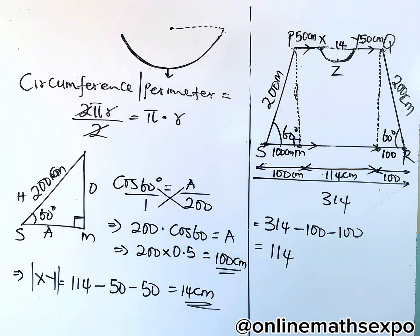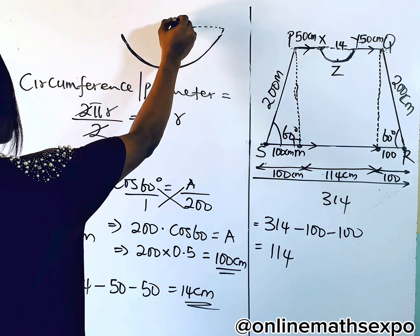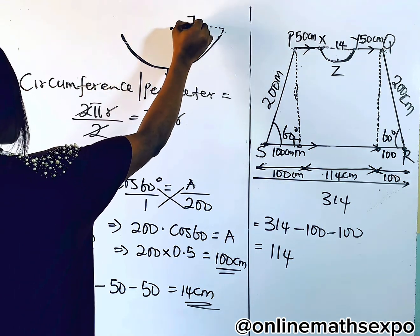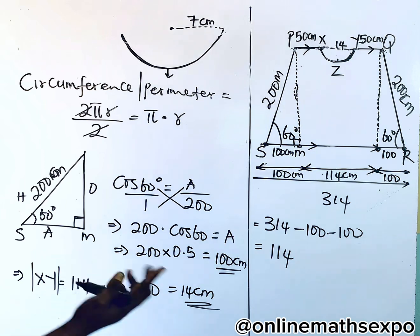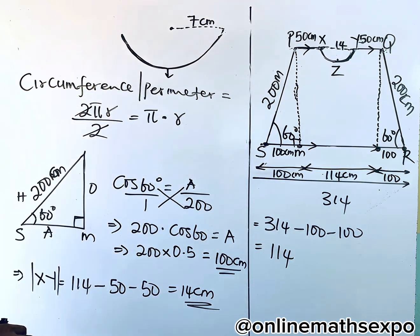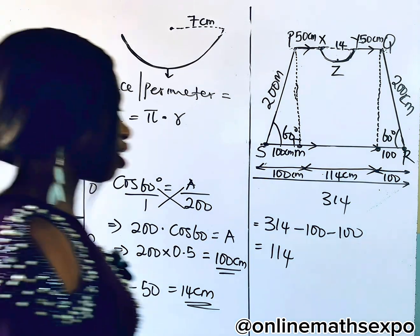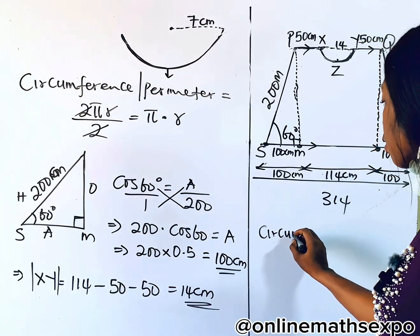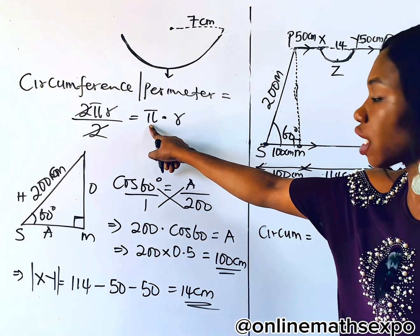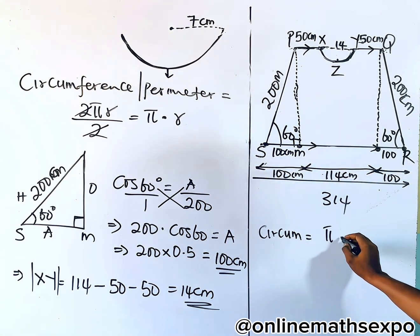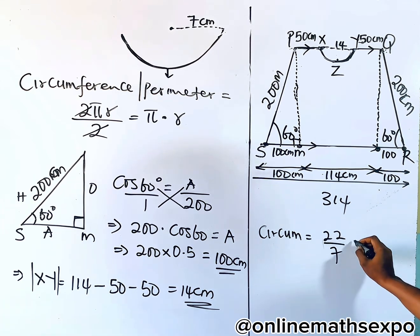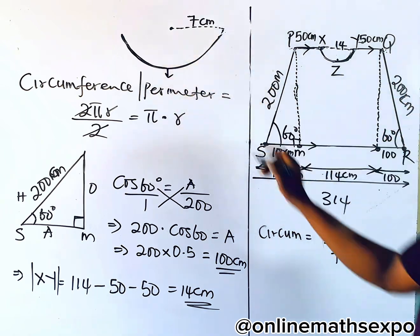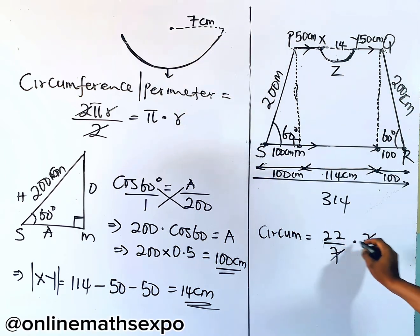If that length is 14, the total of XY is 14. So the radius will be half of it, which is 7 centimeters. If this length is 7 centimeters, we can now calculate the circumference of this particular shape. We stopped at πR, so it's going to be π multiplied by the radius. We are told π is 22 over 7, then multiplied by the radius which is 7. The 7s cancel and we get 22 centimeters.